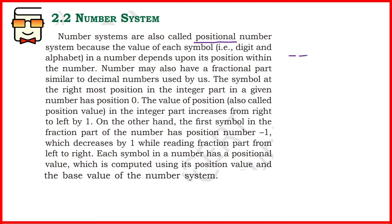Why are they called positional? Because each symbol in a number represented by any number system has a value that depends on the position in which that symbol occurs. For example, if there is a decimal point, a '1' occurring just before the decimal point will have a certain value, but if it occurs just after the decimal point its value will be completely different. The value of each literal is defined by the position on which that literal is present.